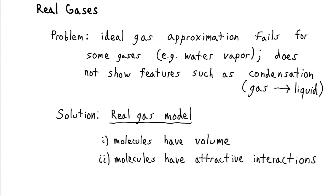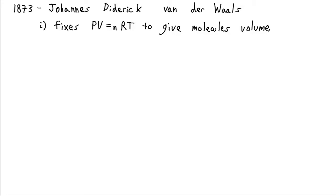We're going to now allow molecules to have volume. According to the ideal gas picture, they don't have any volume. And we're going to allow them to have attractive interactions. The ideal gas approximation says molecules don't have any interactions.